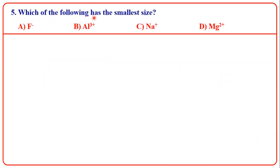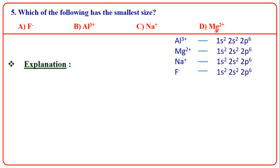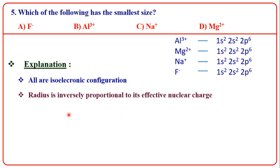Next question: which of the following has the smallest size? The species Al³⁺, Mg²⁺, Na⁺, and F⁻ have similar electronic configuration — isoelectronic configuration. For isoelectronic configuration, the radius is inversely proportional to the effective nuclear charge. That is, greater effective nuclear charge means smaller radius. The nuclear charges are 13, 12, 11, 9 — decreasing in that order, so radius increases.